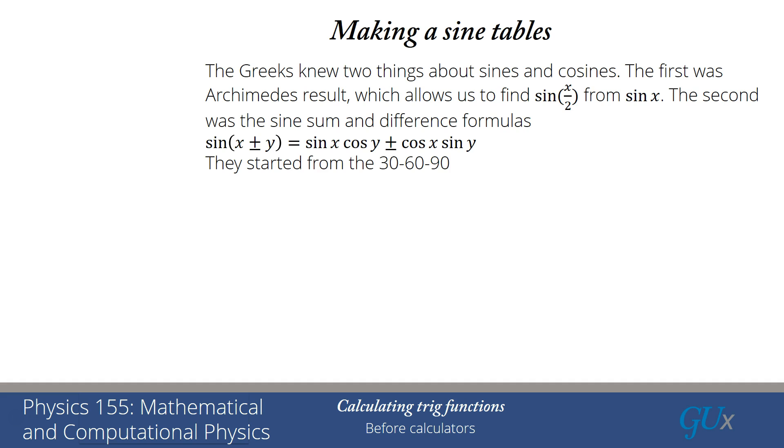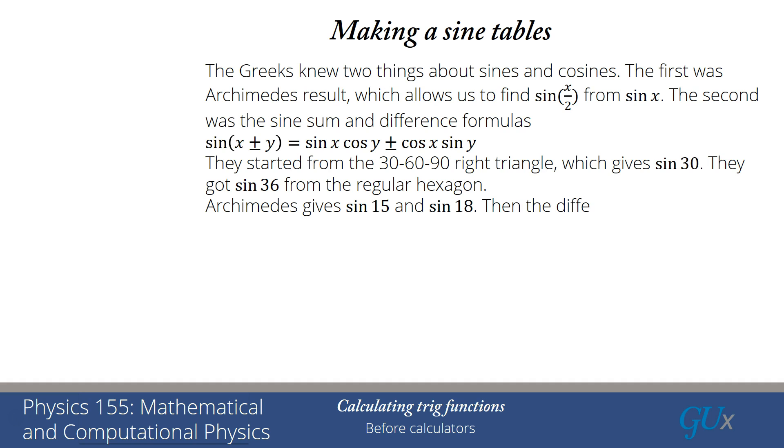Okay, so how do we start? They knew about a 30-60-90 right triangle, which gives them sine of 30, and you may remember sine of 30 is equal to a half. They got sine of 36 degrees from a regular hexagon, which they also knew all the details about that shape. Then they applied Archimedes to each of those results to get sine of 15 degrees and sine of 18 degrees.